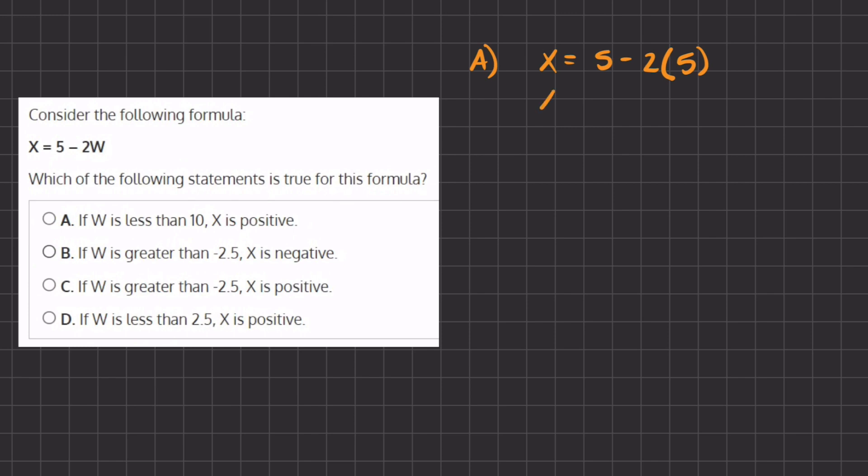And now we get that X equals 5 minus 10, which gives us negative 5, meaning that this X is not positive, it's negative. So A is incorrect.